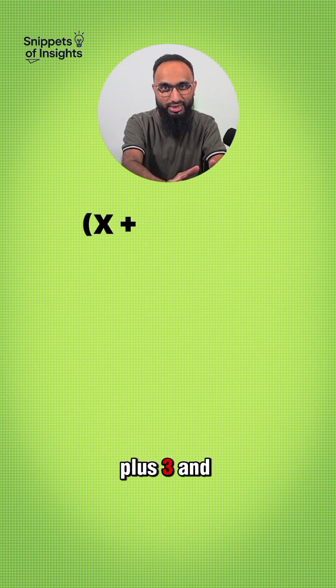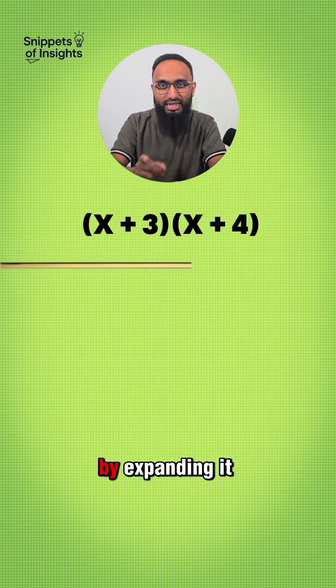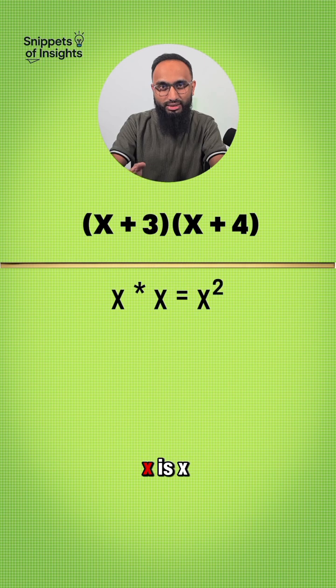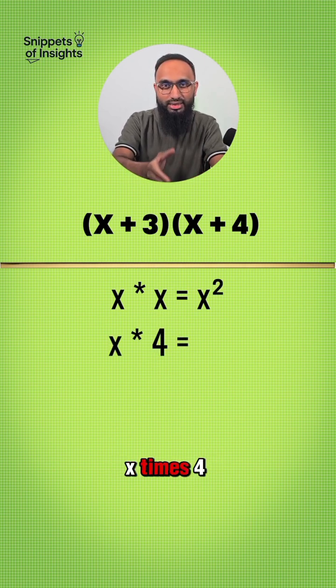So we write it as (x + 3)(x + 4). Let's double check by expanding it back. So x times x is x², yup.